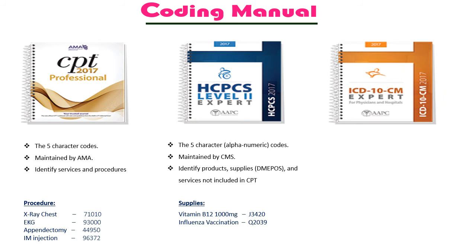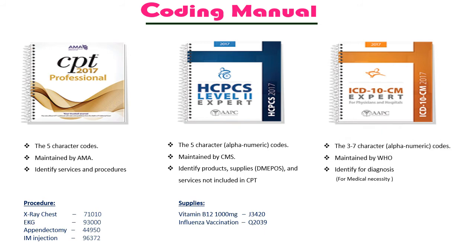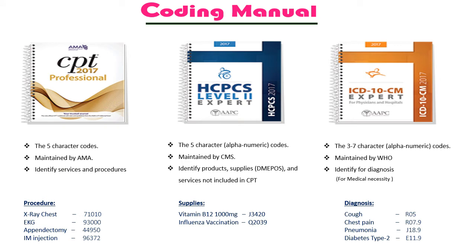Next is ICD-10-CM, which stands for International Classification of Disease, 10th revision, Clinical Modification. These books contain over 70,000 alphanumeric codes, maintained by WHO — World Health Organization. This code book is used to identify the diagnosis. Some examples: R05 for cough, R07.9 for chest pain, J18.9 for pneumonia, and E11.9 for type 2 diabetes.